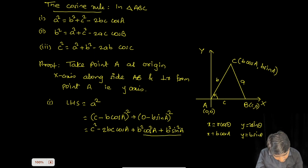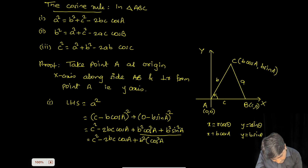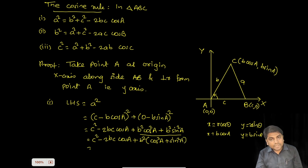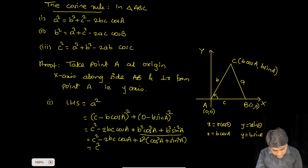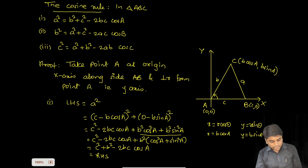Taking b² common from the last two terms gives c² − 2bc cosA + b²(cos²A + sin²A). Since sin²A + cos²A = 1, this simplifies to b² + c² − 2bc cosA, which is the right-hand side. Hence proved. Similarly, we can prove the second and third formulas.